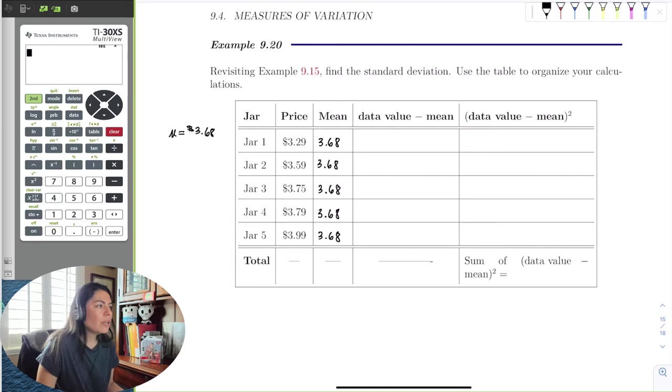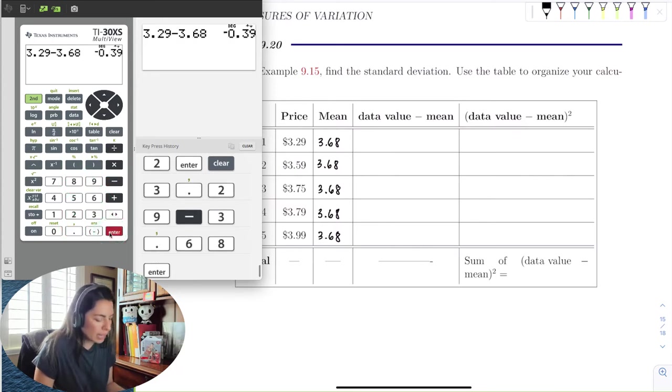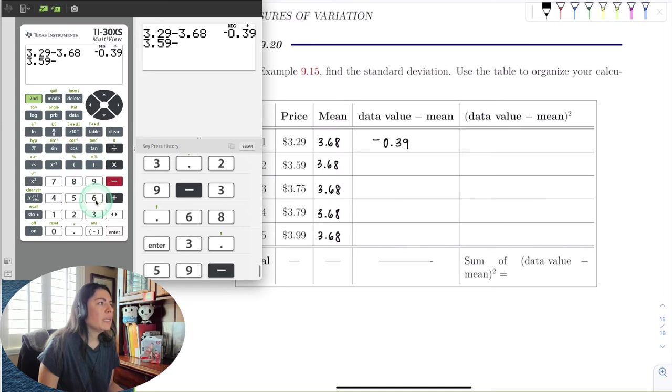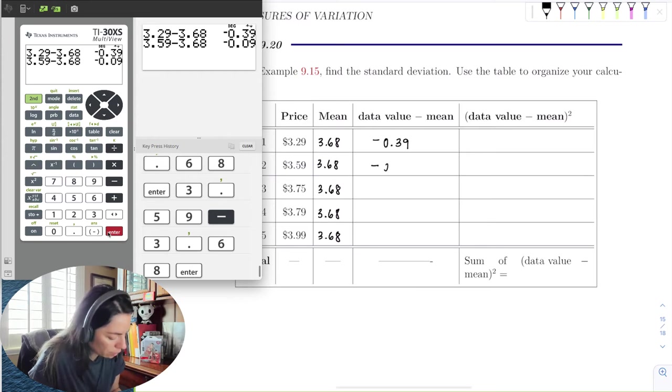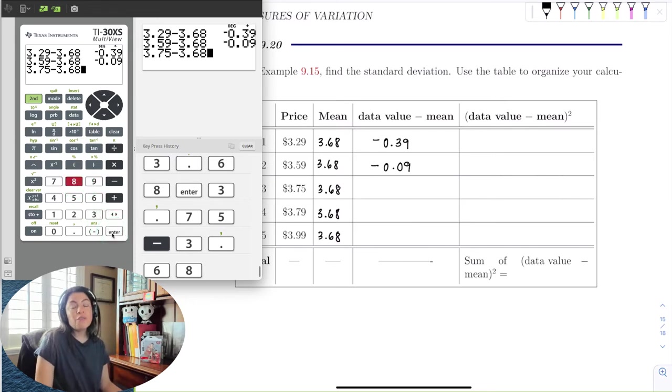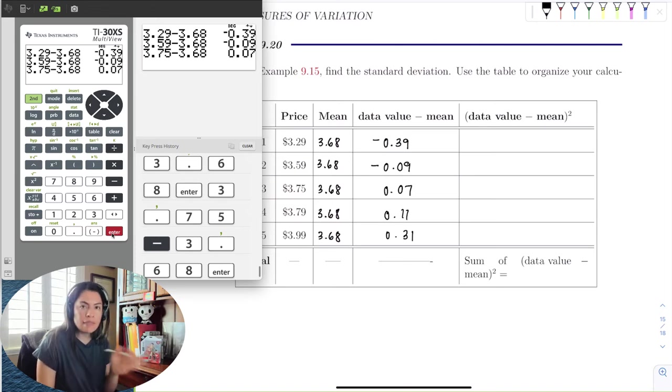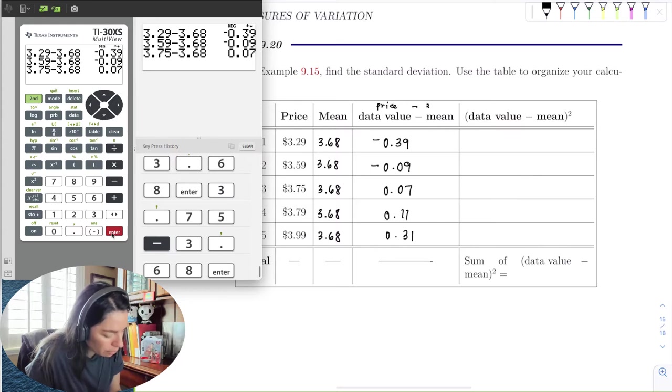So if I were to subtract those, I could go to my calculator and put 329 minus 368 and get negative 39 cents. And then hit 359 minus 368 and negative 0.09 and then 375 minus 368. And if you can do this in your head because I know some of you by your forums that you guys are great at cash back, counting cash and coins. So do it in your head if you can. If not, just use the calculator. And therefore, the last two is 0.11 and then 0.31. So all I did was subtract the price and the mean in that order. So this is price minus the mean of 368.